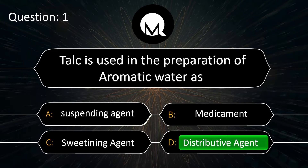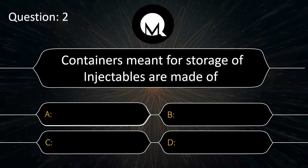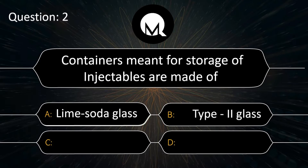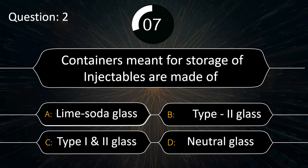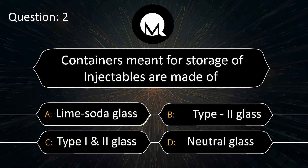Containers meant for storage of injectables are made of: lime soda glass, type 2 glass, type 1 and 2 glass, or neutral glass? Answer is type 1 and 2 glass.